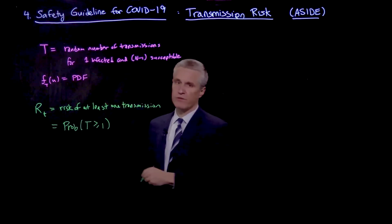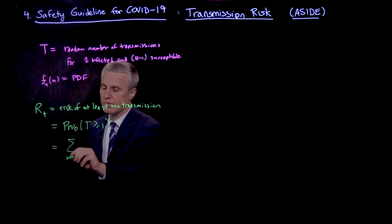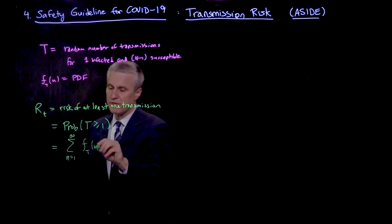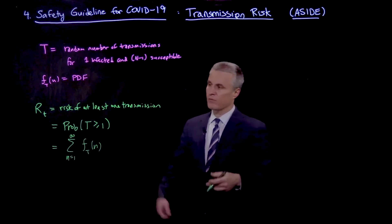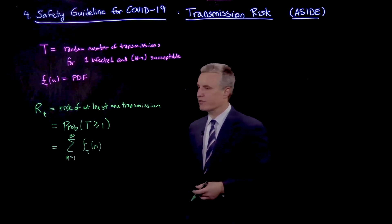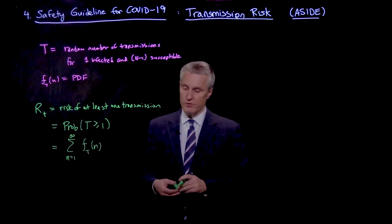Well, in terms of the probability density function then, that would be a sum from 1 to infinity of the f_t of n. So we're just adding the probabilities that we're not seeing a transmission to those or possibly a transmission to those different numbers of people.